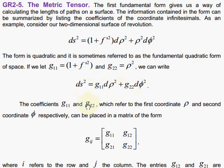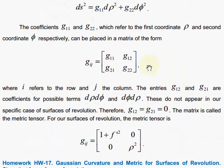The coefficients g1,1 and g2,2, which refer to the first and second coordinates respectively, can be placed in a nice matrix, which we refer to as the Gij matrix. i refers to the row and j is the column. So first row, first column, first row, second column, second row, first column, second row, second column.